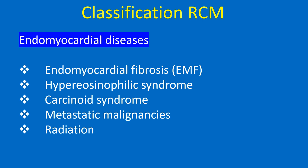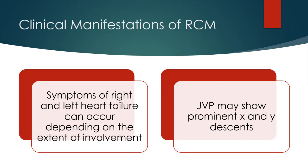Endomyocardial diseases include endomyocardial fibrosis (EMF), hypereosinophilic syndrome, carcinoid syndrome, metastatic malignancies, and radiation. Clinical manifestations: symptoms of right and left heart failure can occur depending on the extent of involvement.